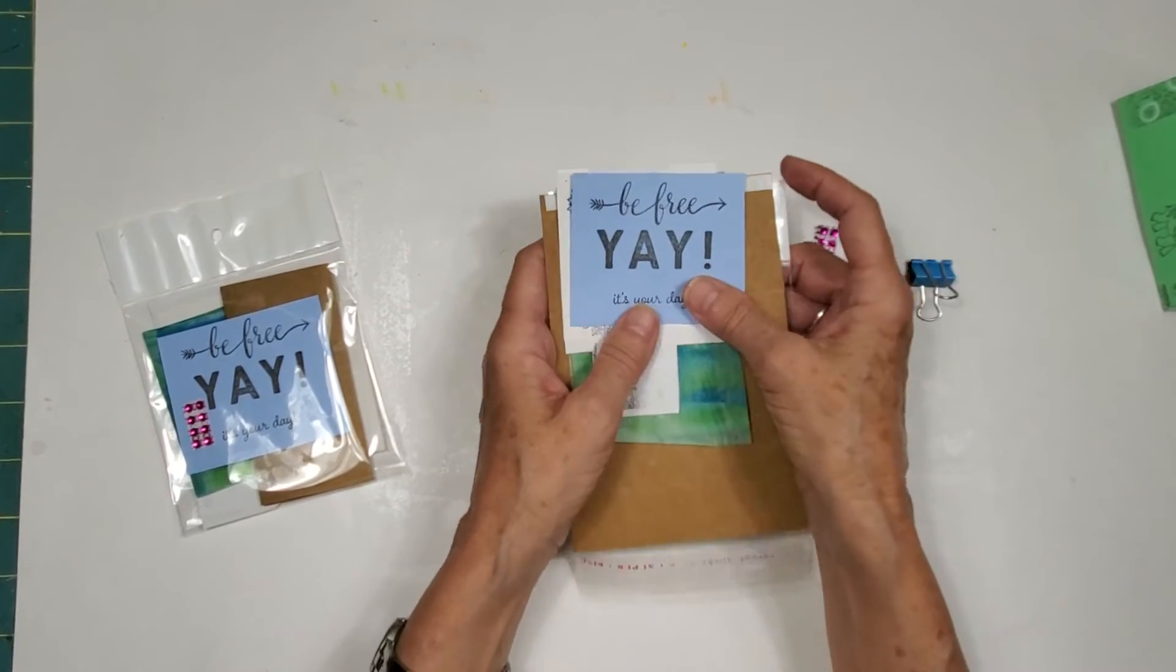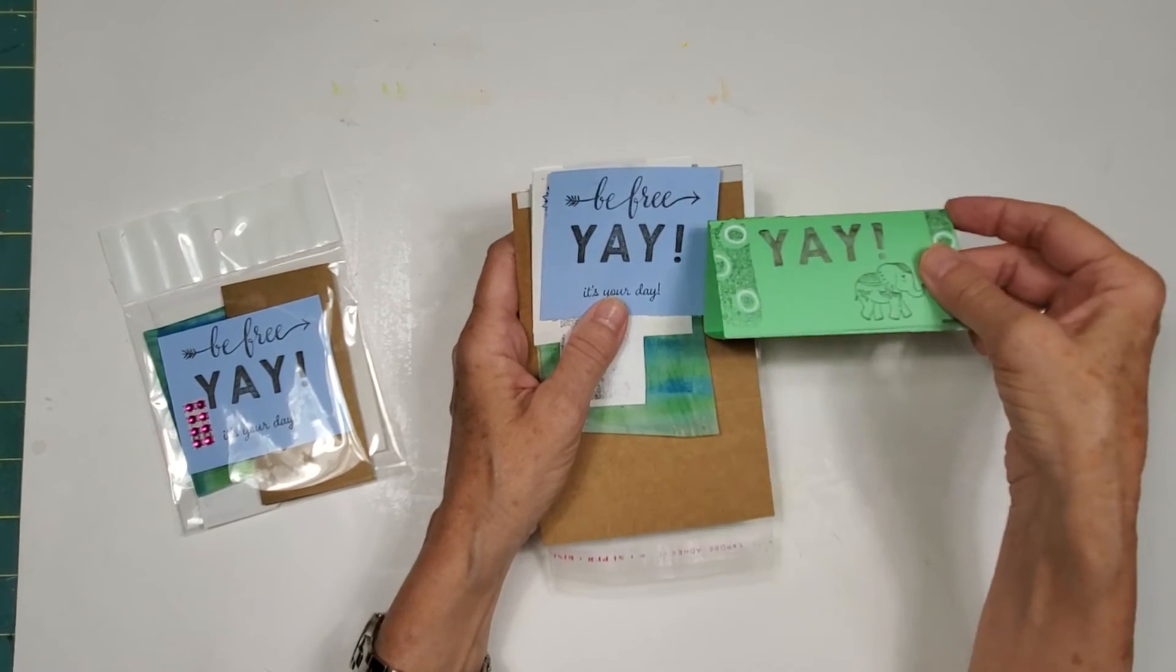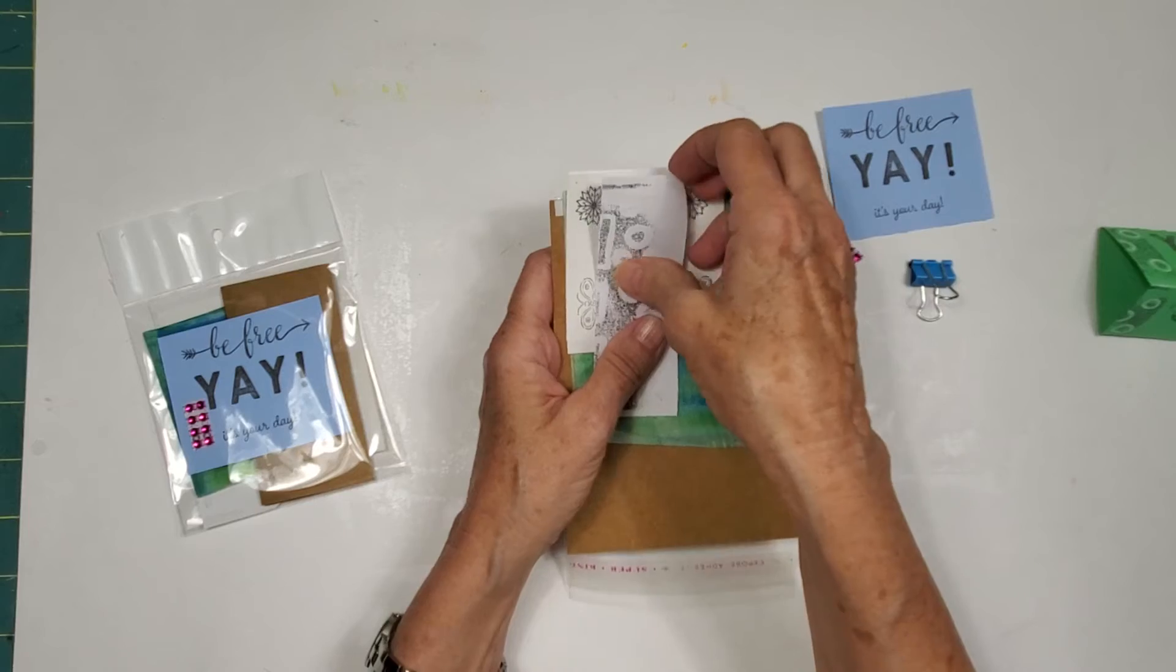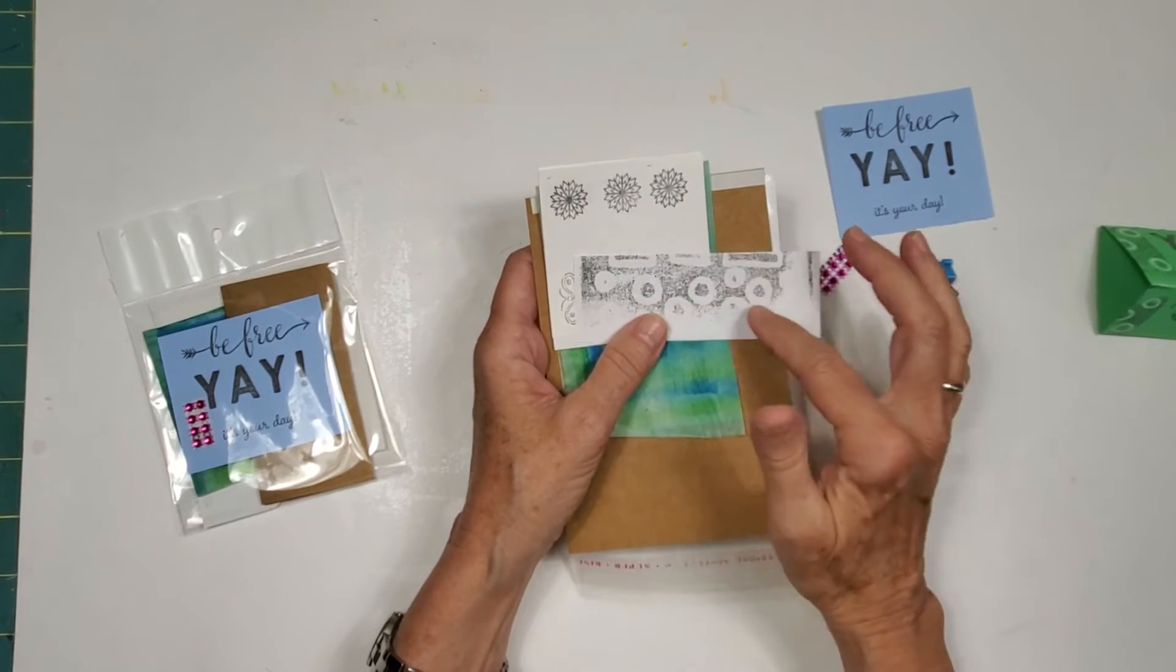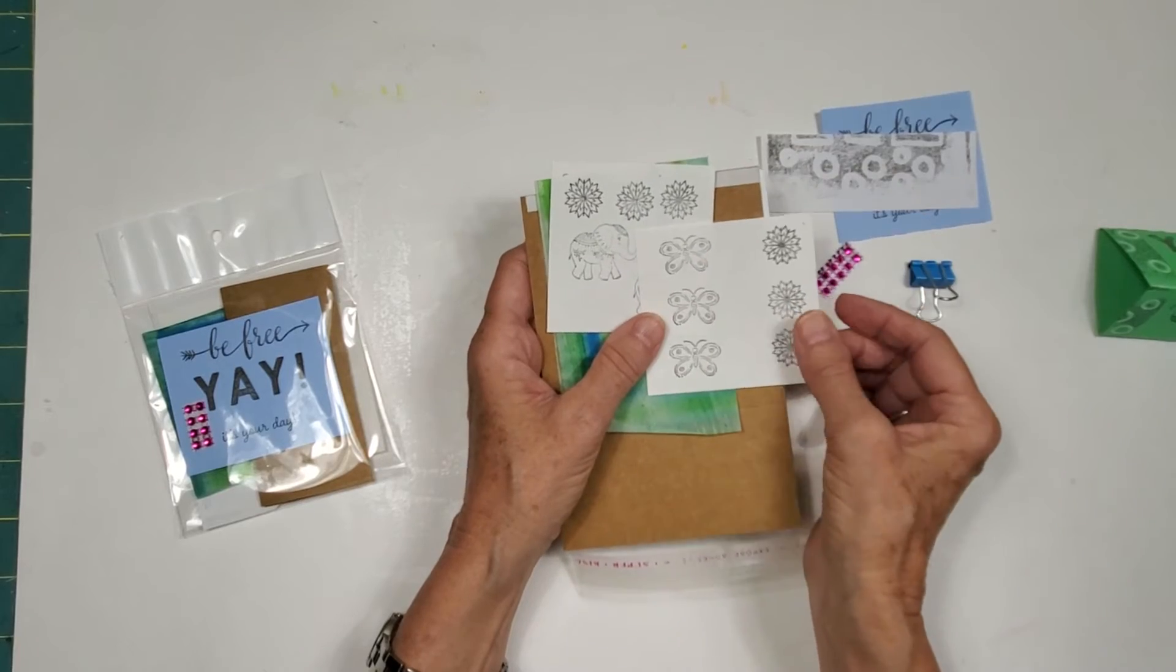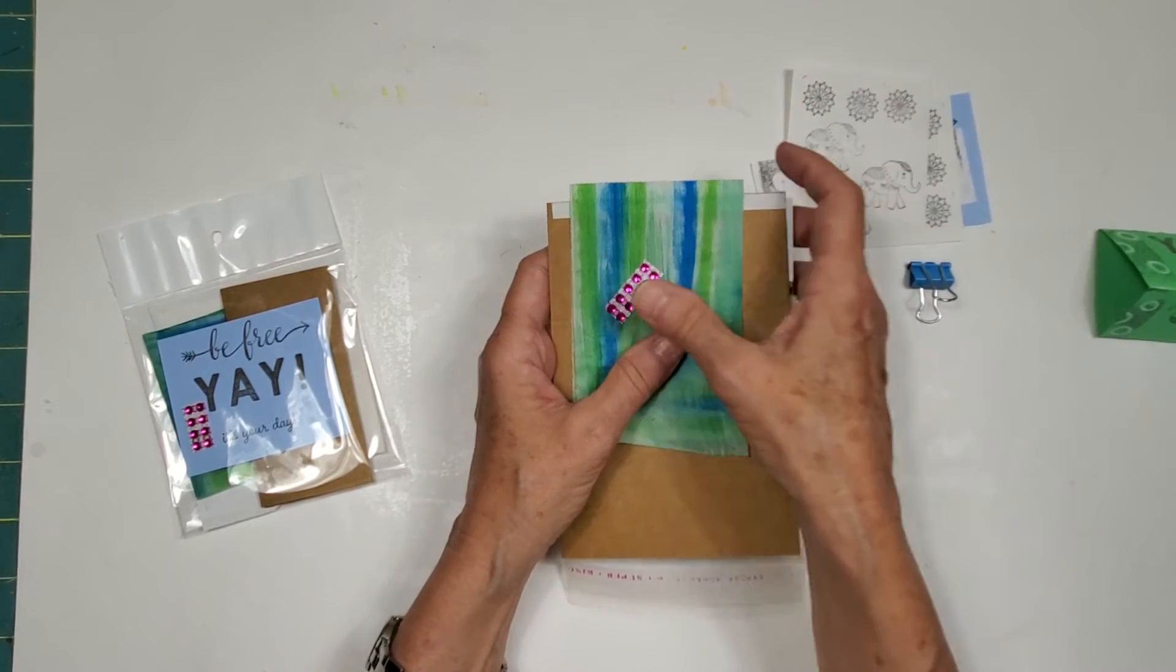So it got a little bit of bling. We've got some decorative elements that you can cut apart. We've got decorative, this is some decorative stamping from an original stamp that I made and we've got things for you to color and add to your desk sitter.